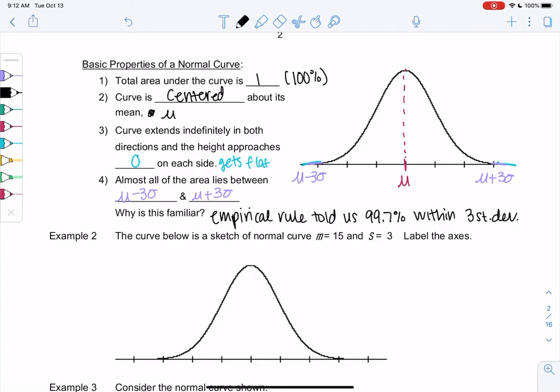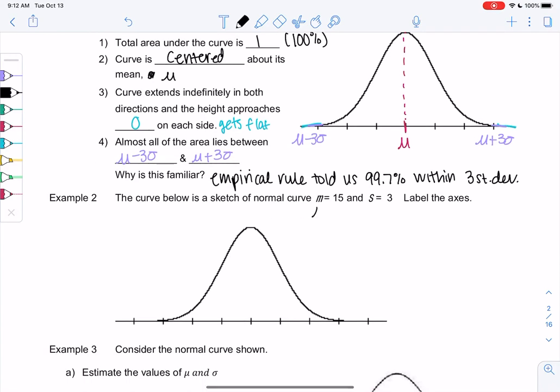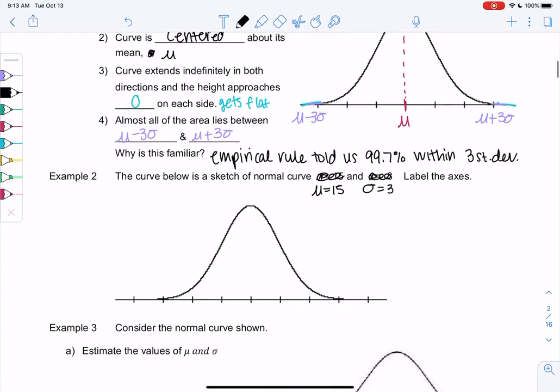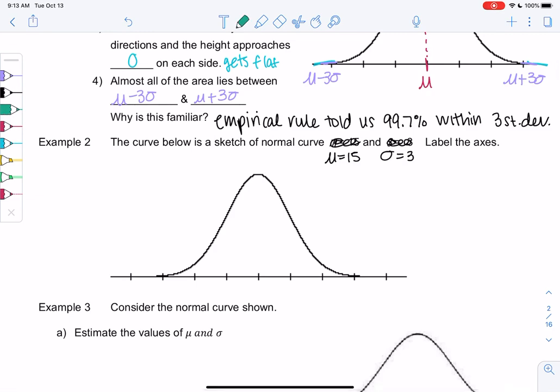So let's sketch one. And so we have mu is equal to 15, and we have standard deviation is equal to 3. And we'll label the axes. So the axes is just the number line on the bottom. We're going to go ahead and put the mean right in the middle. So right where that peak is, 15 goes in the middle. And then we just kind of, what I do is I count by sigma just three times. And again, three times because of the three standard deviations.